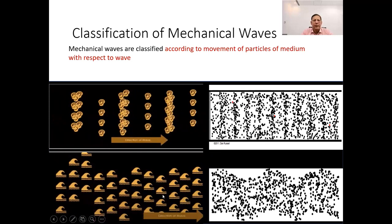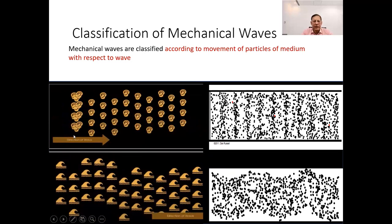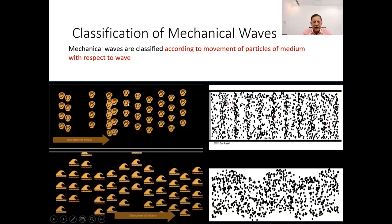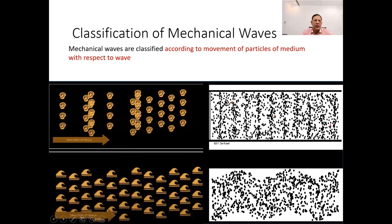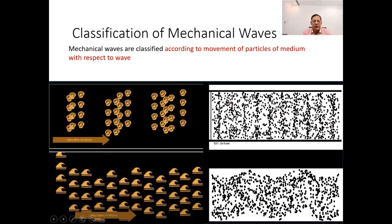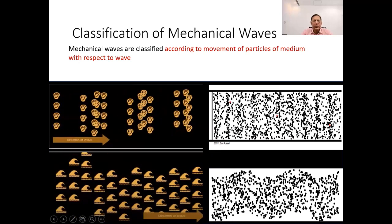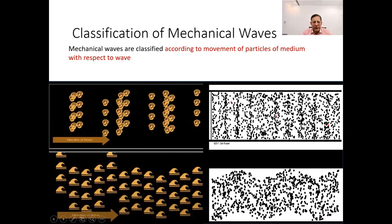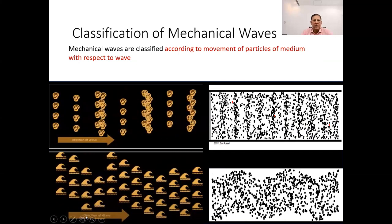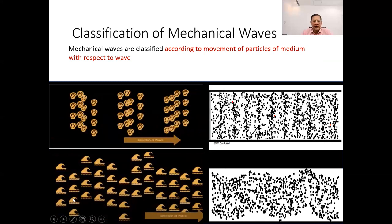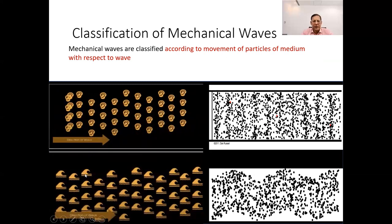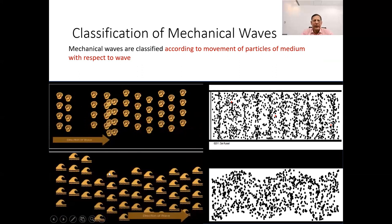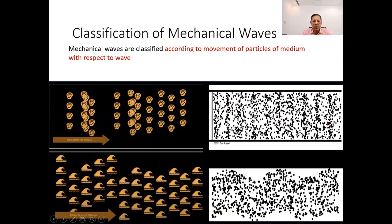In case of longitudinal wave, molecules of the medium vibrate back and forth in the same direction as the wave is traveling, or you can say particles move parallel to that of the wave direction. While in case of transverse wave, molecules in a medium vibrate at any degree to the direction of the traveling wave, or you can say particles move perpendicular to that of the wave direction.